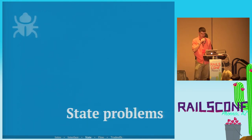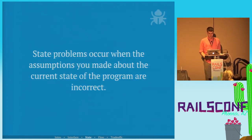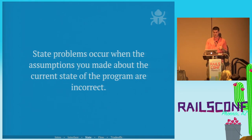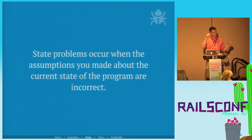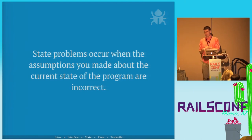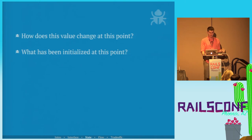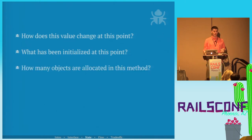State problems. State problems occur when the assumptions you made about the current state of the program are incorrect. The internal state of every object in your system living in memory — what assumptions are you making at each point in code that may not be correct? They answer questions like: how does this value change at this point, what has been initialized at this point, and how many objects are allocated in this method?